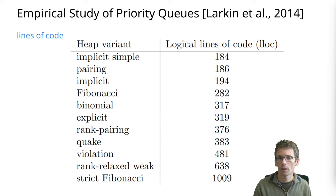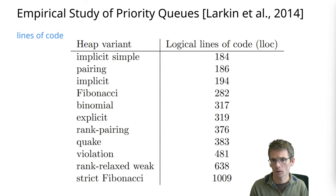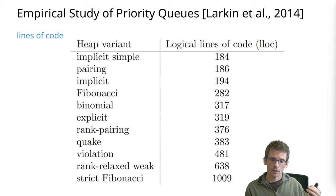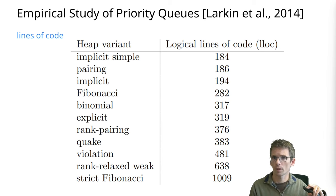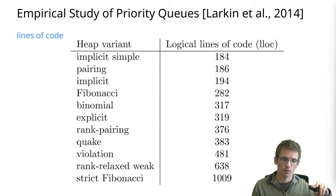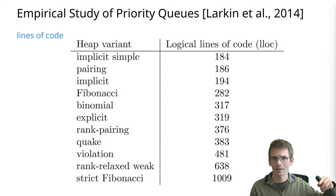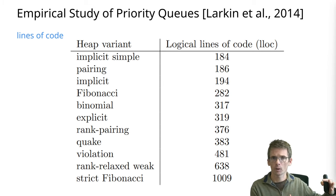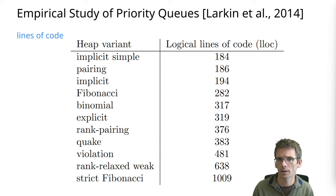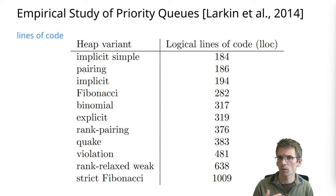If you look at lines of code, the differences are actually not that large. The implicit and pairing implementations are very close together. Fibonacci is not that far away from them either.